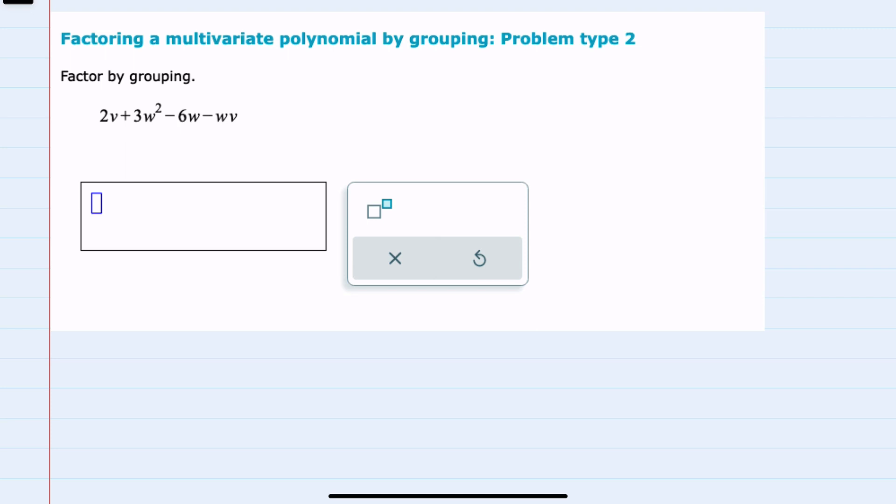And so I'll start with the 3w² and I'll leave the minus 6w behind it because I know that I'll be able to factor something out of those. And then I have the 2v and the minus wv. I can see that I'll also be able to factor something out of those.